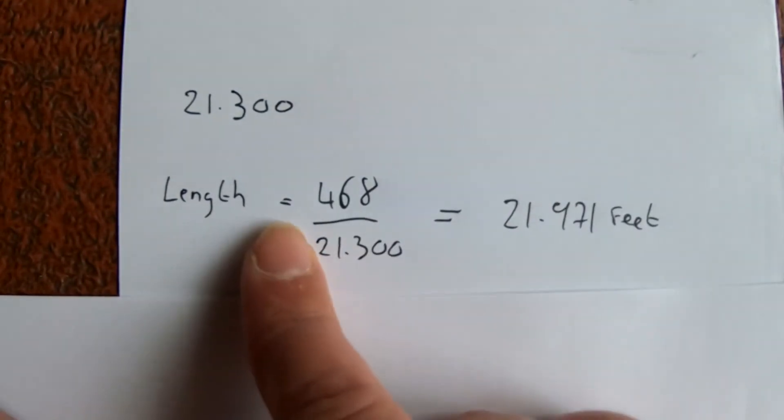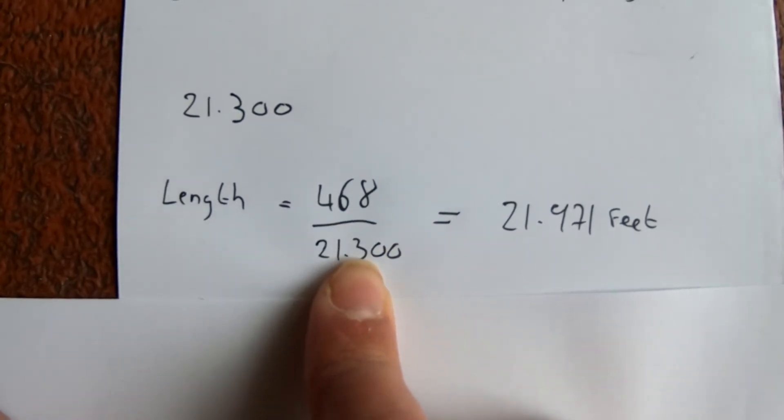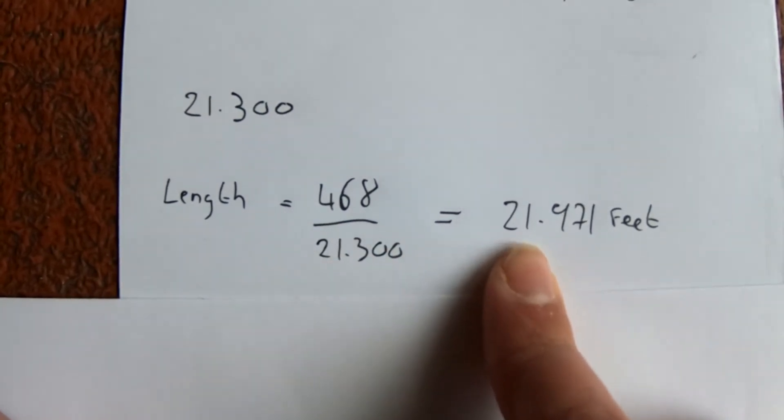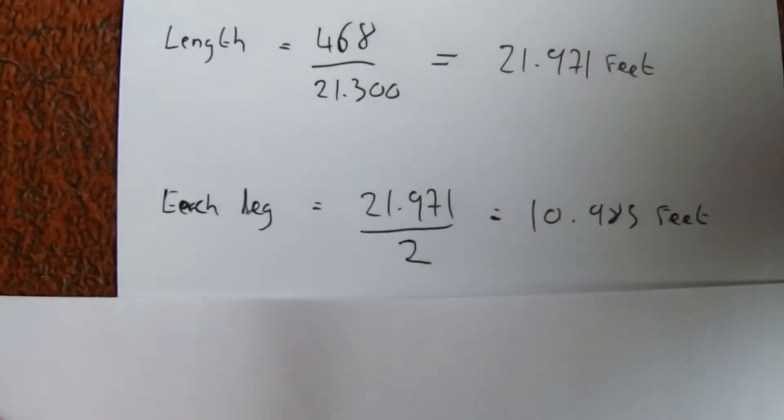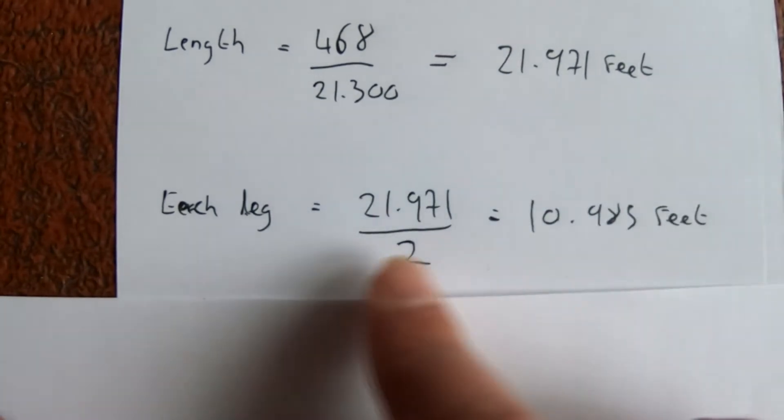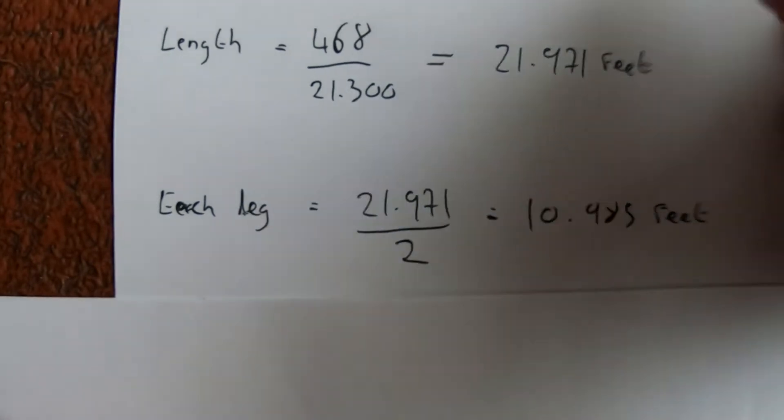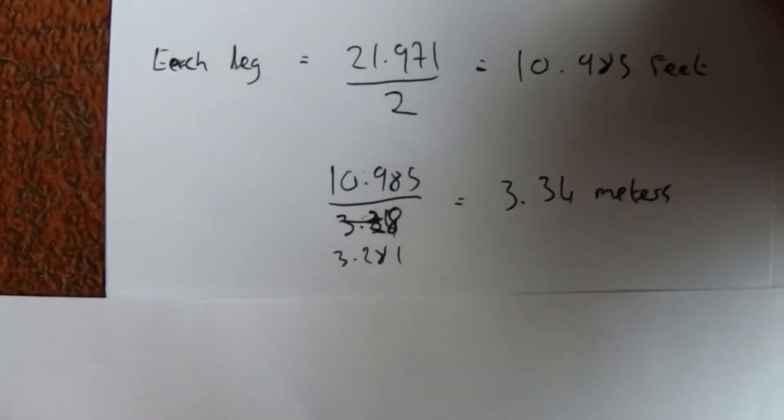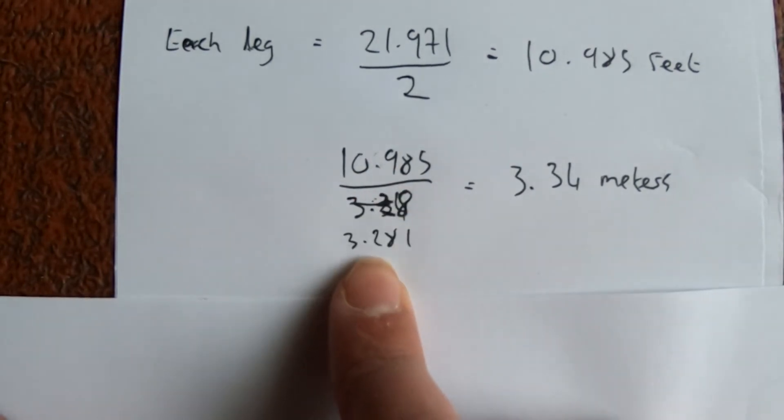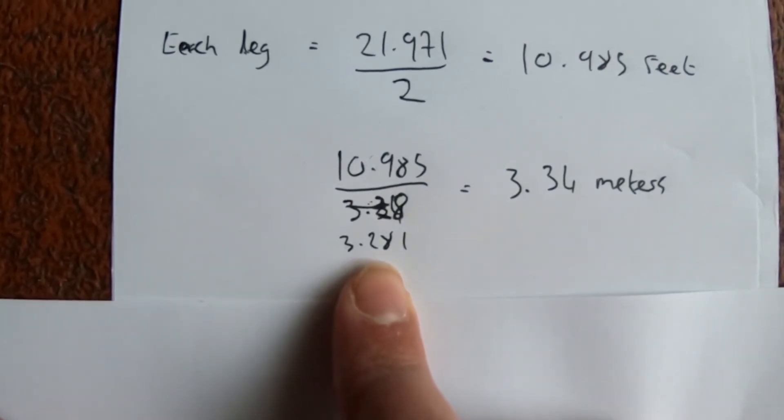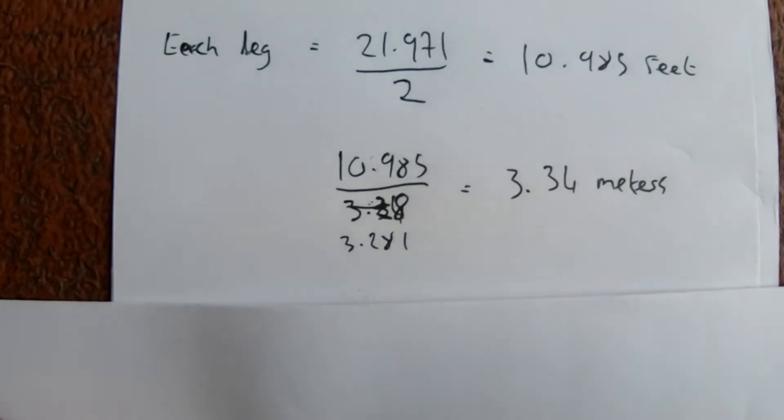We'll take the length that equals 468 divided by 21.3, which gives us 21.971 feet. To find out what each leg of the dipole is going to be, we divide that by 2, which gives us 10.985 feet. To convert that to meters, 10.985 divided by 3.281, so each leg of the dipole is going to be 3.34 meters.